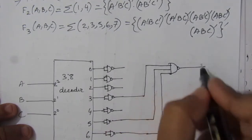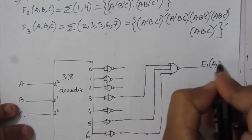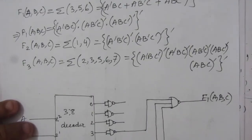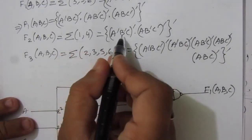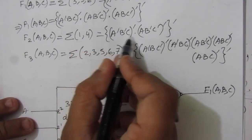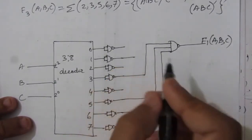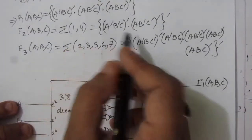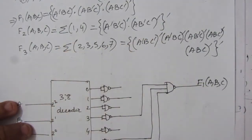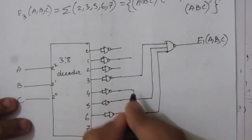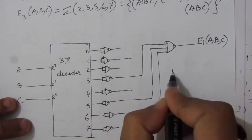For F2, the minterms are 1 and 4. Minterm 1 (A̅B̅C) corresponds to decoder output line 1, and minterm 4 corresponds to line 4 — with line 4 complemented. These two lines are the inputs to a two-input NAND gate, giving us F2(A, B, C).